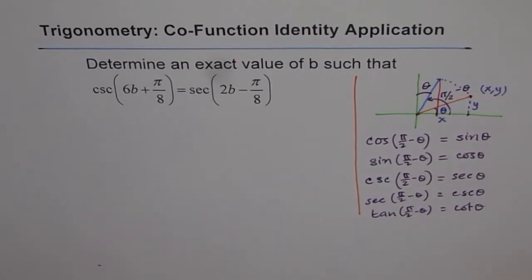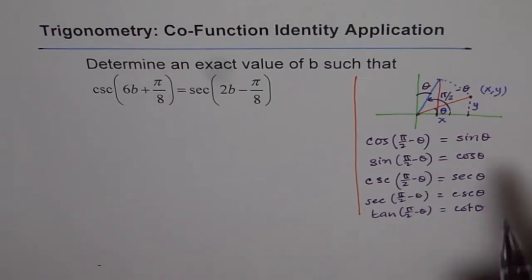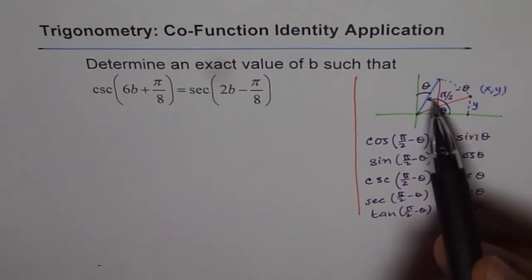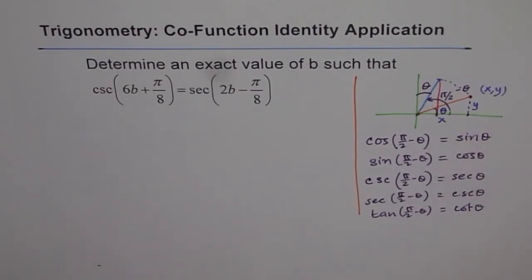These are all co-function identities because tan, cot, cosecant, secant, sine, and cos are all co-function trigonometric identities. They are only equal if the difference in their angle is π by 2. It could be either way. If the difference in the angle is π by 2, then they are equal.